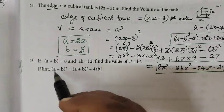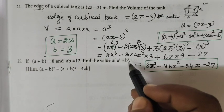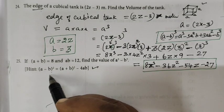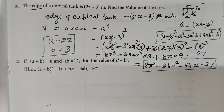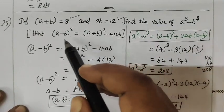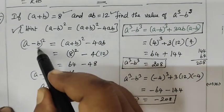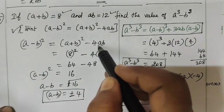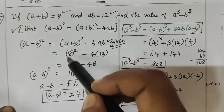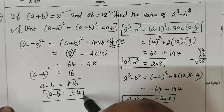Now for the subject answer questions. If a + b = 8 and ab = 12, find the value of a³ − b³. The identity we will use is: (a − b)² = (a + b)² − 4ab. Substituting the given values: a + b = 8, ab = 12, we get a − b = ±4.